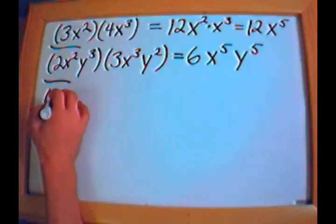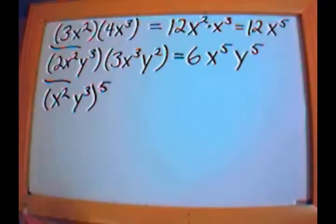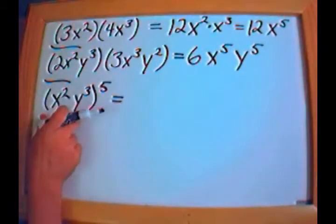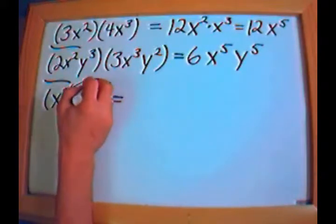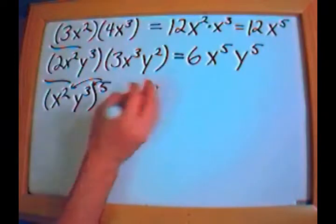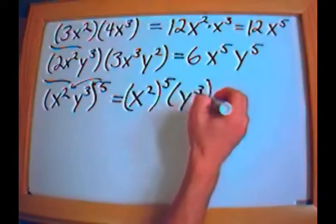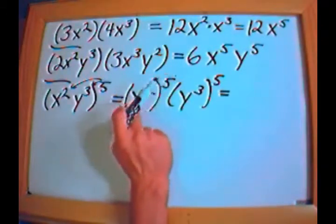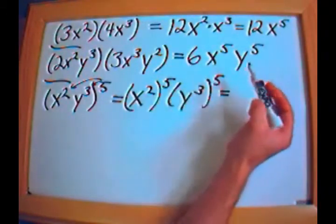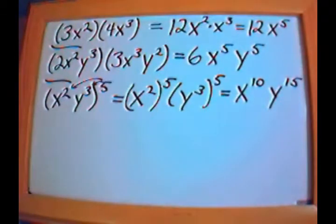As a review, what if I had something like x squared times y to the third, with this entire thing raised to the fifth power? From our exponent class, when you have a product raised to an exponent, you distribute and apply the exponent to each term: x squared to the fifth times y to the third to the fifth. Multiplying those exponents gives x to the tenth times y to the fifteenth.